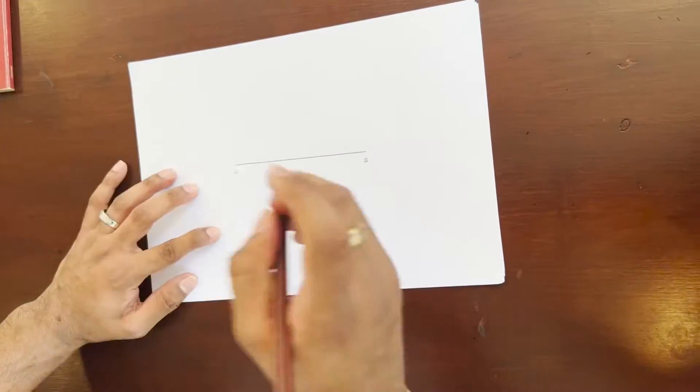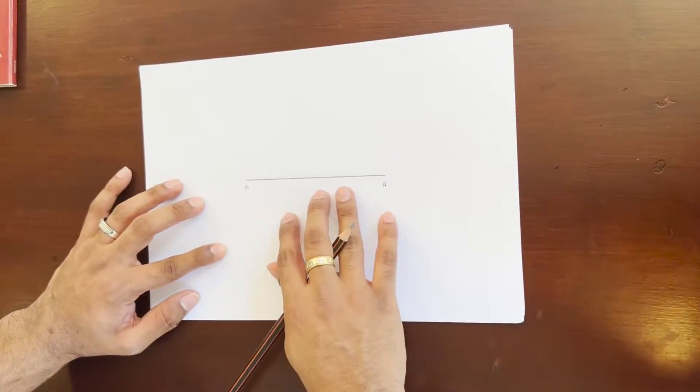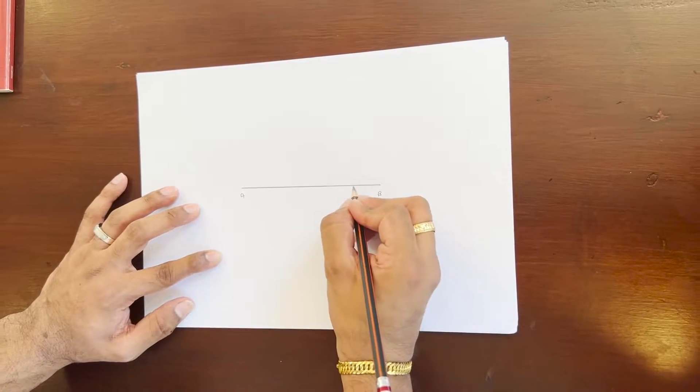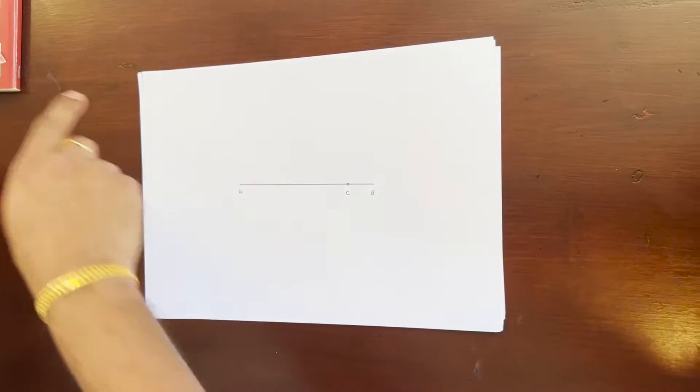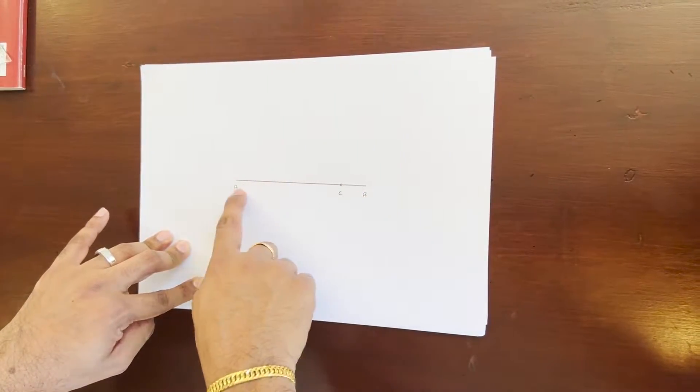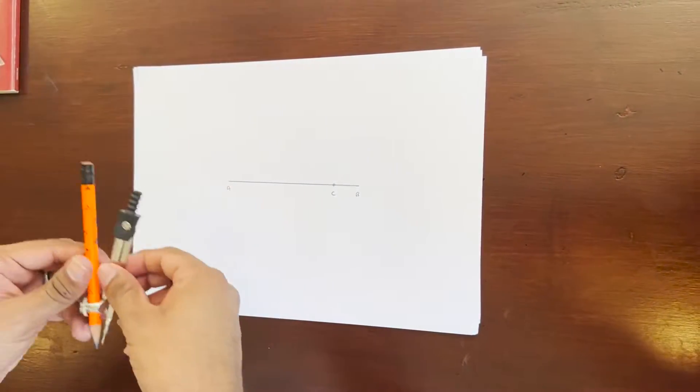Now step number two, we are going to choose a point on line AB. Let's say my point is right here and I call it point C. This point you can keep wherever you want, it is totally up to you.